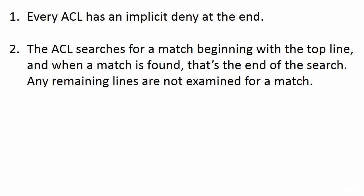Another rule is that the ACL searches for a match beginning at the top line, and when a match is found, that's the end of the search. Unlike the IP routing table where we look for the best match, with an ACL we're looking for any match — and when one is found, that's it. So if you have a 20-line ACL and a match is found on line one or line 19, the search stops there. We've got to be very careful about the order of our lines.